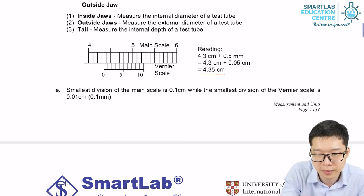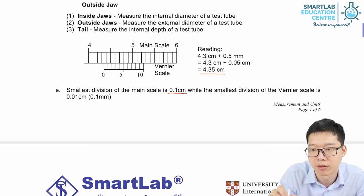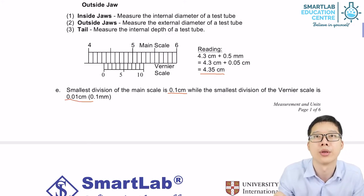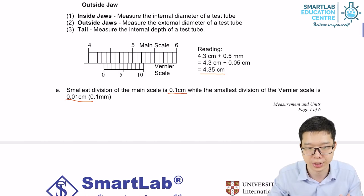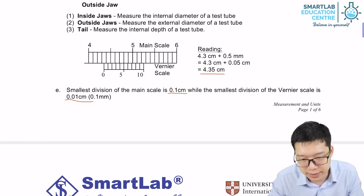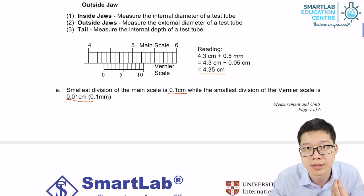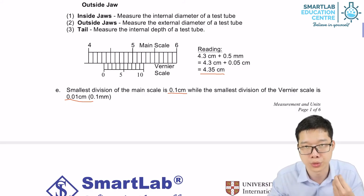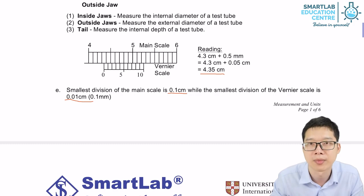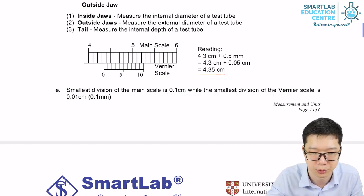To state it again: the smallest division of the main scale is 0.1 cm, while the smallest division of the vernier scale is 0.01 cm. Using both together, the precision of the vernier caliper as a whole is 0.1 mm or 0.01 cm - 10 times more accurate than a normal ruler.